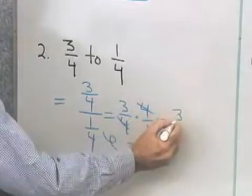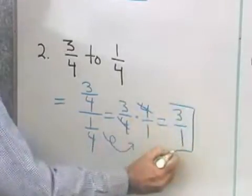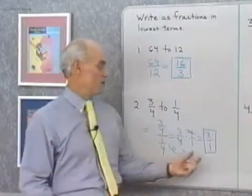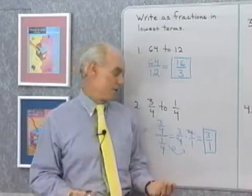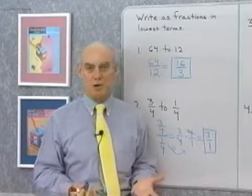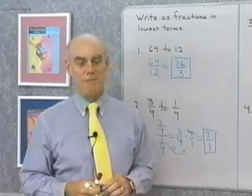and I end up with simply 3 over 1. Since I'm working with ratios, I'll keep that as 3 over 1. If I was working with just regular numbers, I might simplify it down to 3, but since we're working with ratios, let's leave it as 3 to 1.